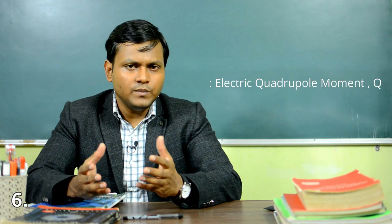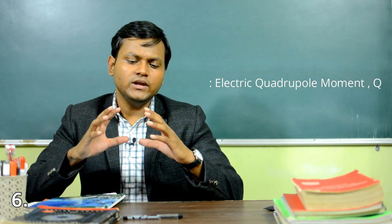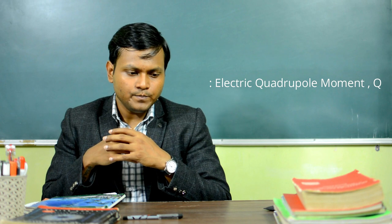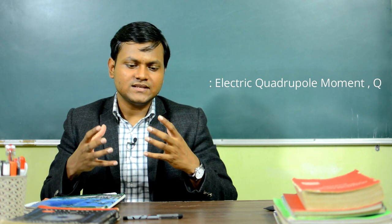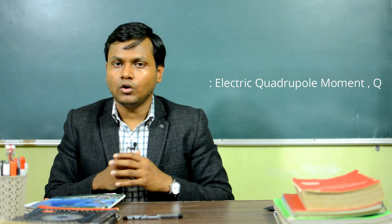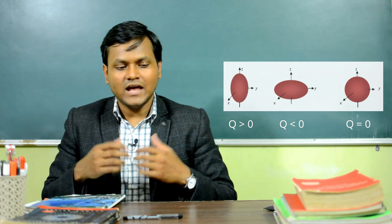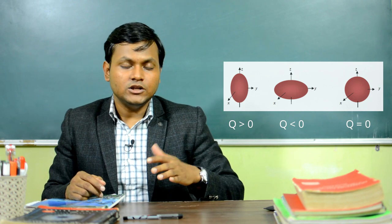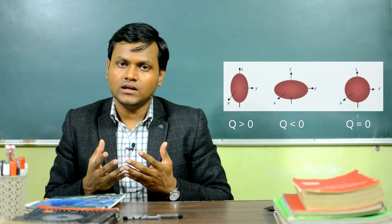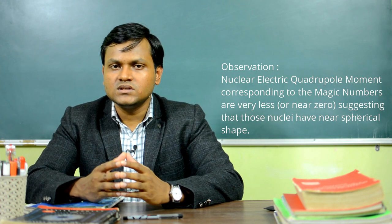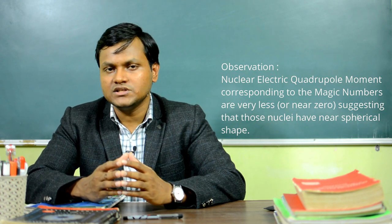Another interesting property associated with magic numbers is the electric quadrupole moment, which gives us an idea about the nuclear charge distribution. Since the nucleus contains protons spatially distributed inside the nuclear volume, the electric quadrupole moment tells us whether the charge distribution is symmetric or not. If it is zero, the charge distribution is spherically symmetric — the nucleus is spherical in shape. If it is non-zero, the nucleus has a deformed shape. The nuclear quadrupole moments corresponding to magic numbers are very very small — in fact, they have minima at the magic numbers.